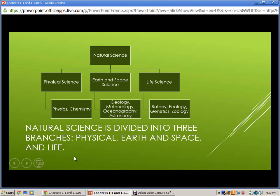Now there are three branches of natural science. There are physical sciences, earth and space science, and life science. So physical science is what we're going to be studying this year, which is physics and chemistry. And physics kind of encompasses a little bit of everything, so we will talk about a little bit of earth and space science as well.